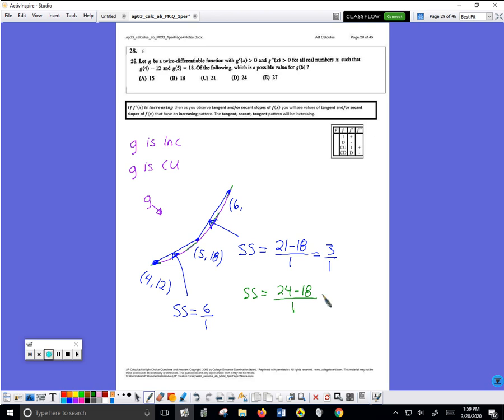The x coordinates would still change by 1. That would give me a secant slope of 6. If this secant slope is 6 and this secant slope is also 6, the curve would not be concave up - G would not be concave up.